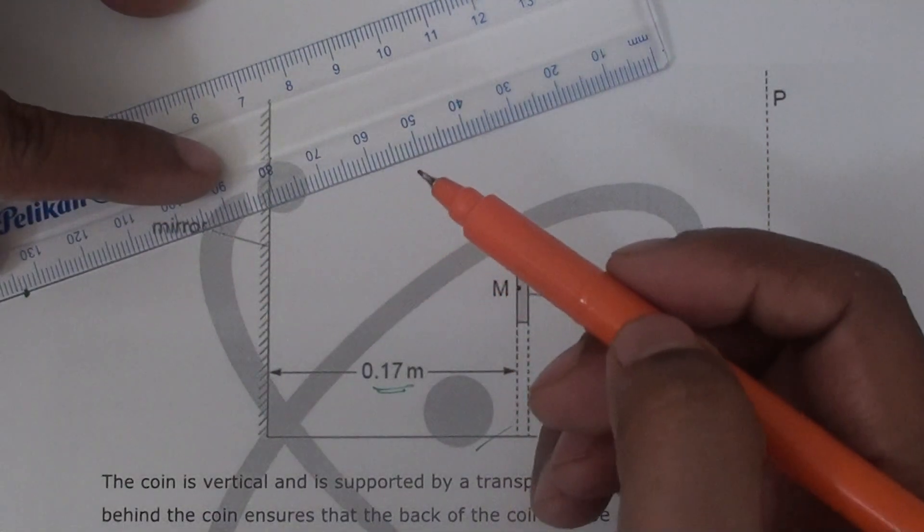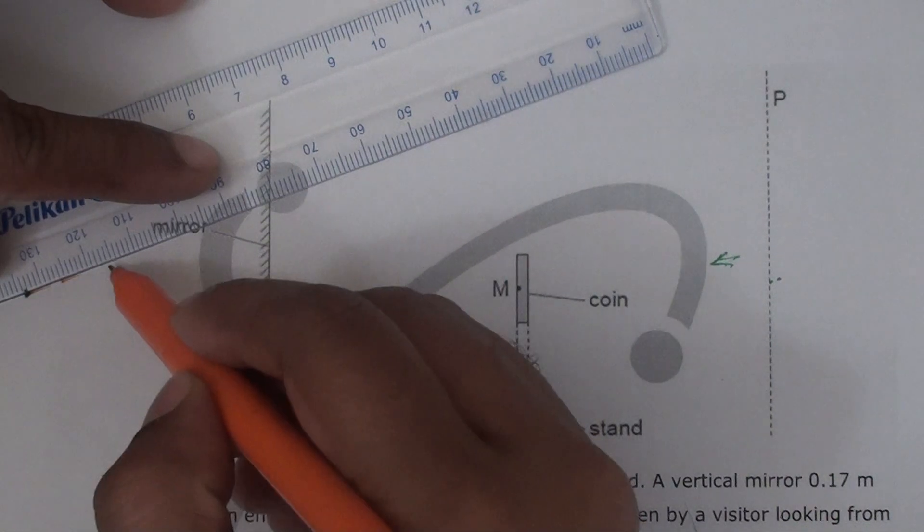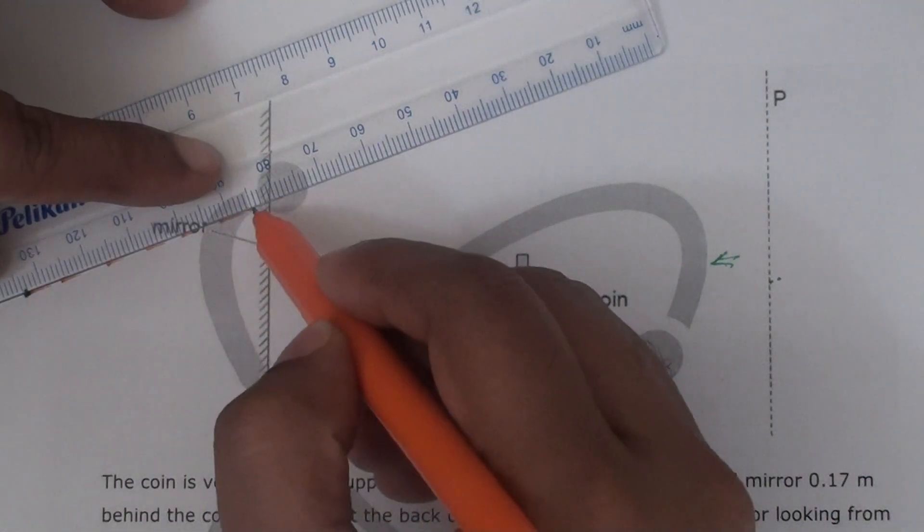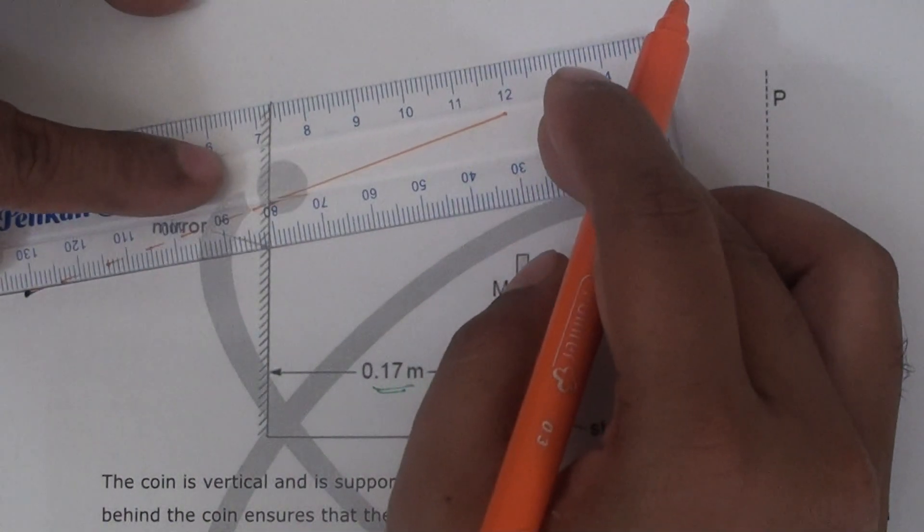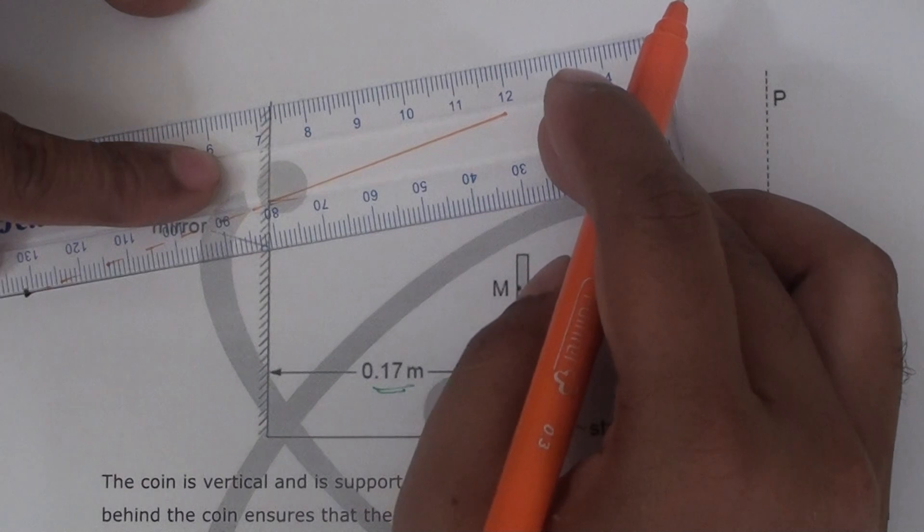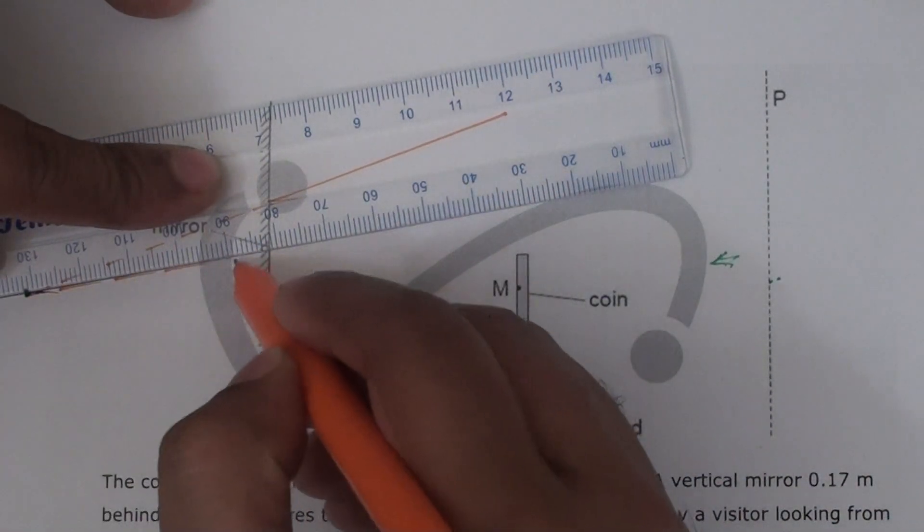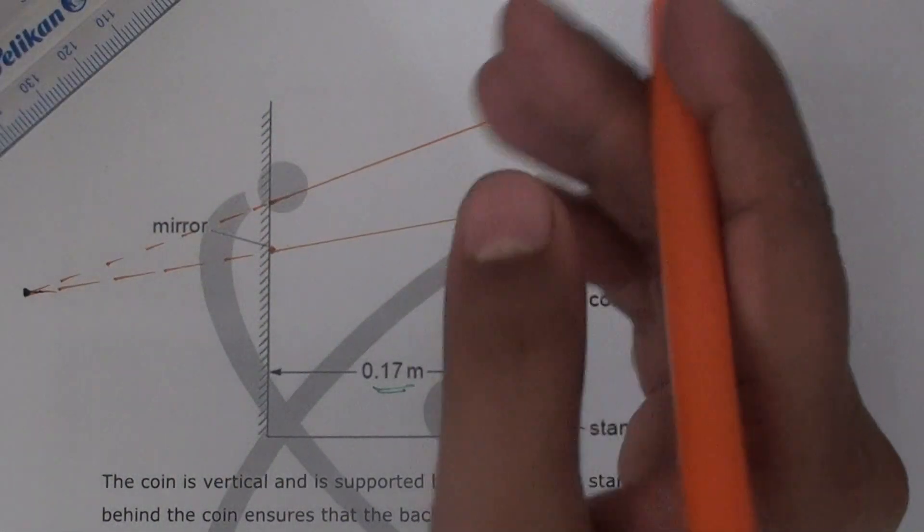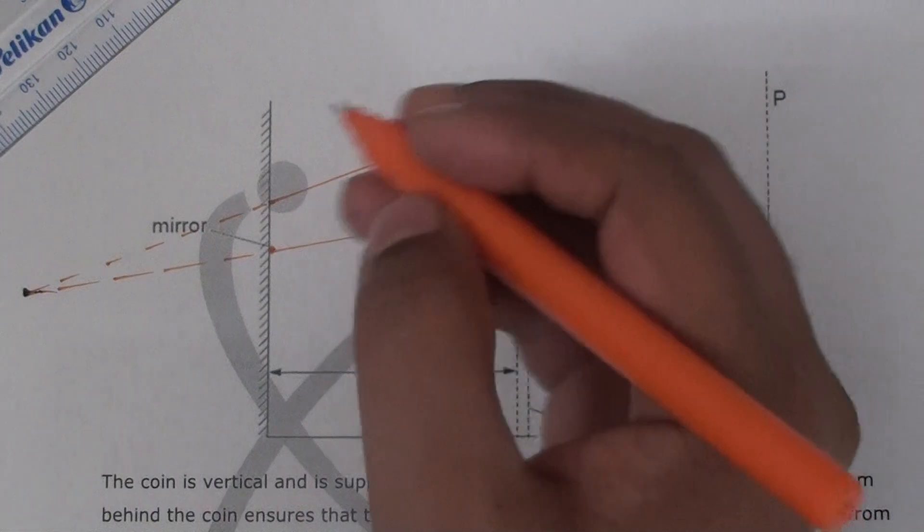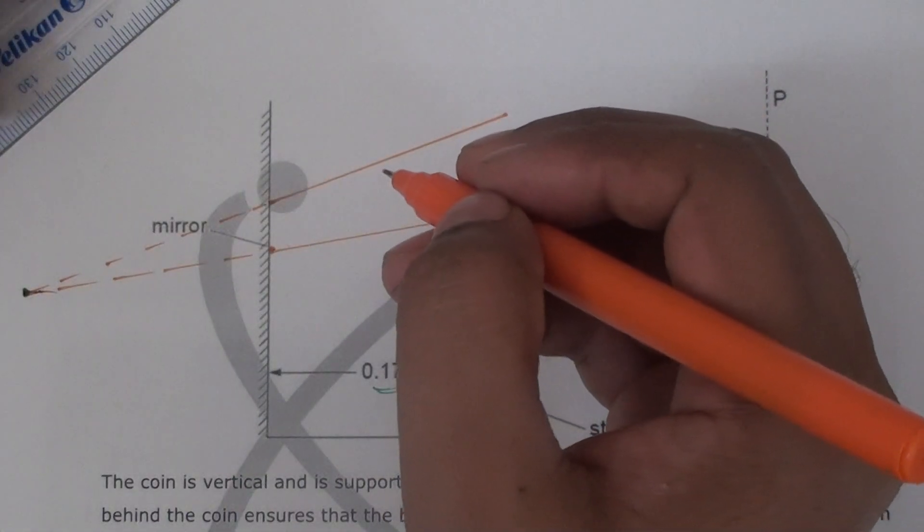So we need any two lines, but they should be meeting at this one, right? So behind the mirror they should be dotted lines, but after the mirror there should be continuous lines. Something like here, maybe.